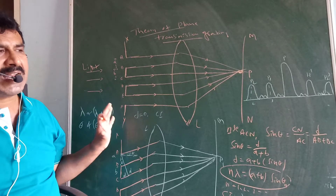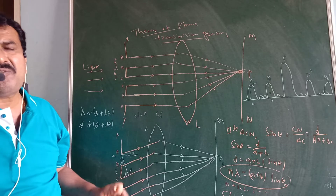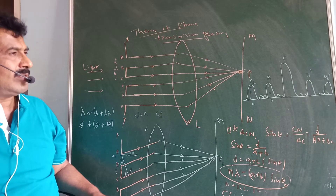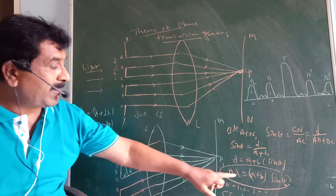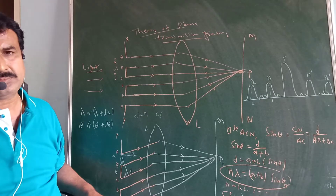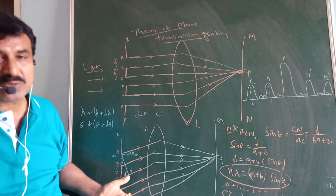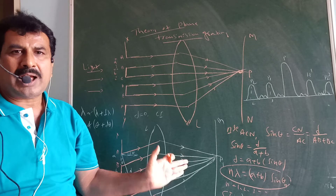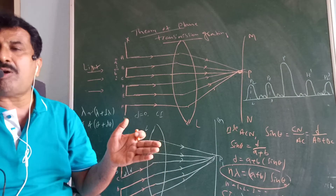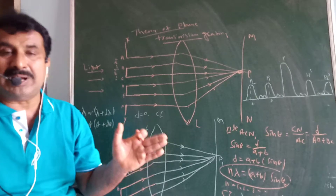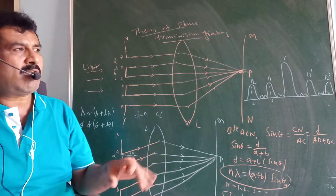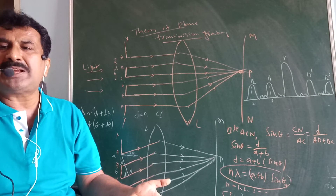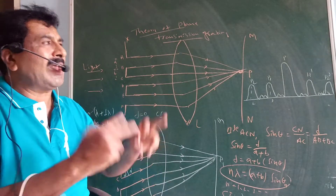This is the path difference between the secondary waves emanating from the extreme ends of each slit. If the path difference between the secondary waves is an integral multiple of wavelength lambda — that is, delta equals N lambda — then constructive interference takes place. For N equals 1, a bright band is produced at point P1, called the first order principal maximum. N equals 2 gives the second order principal maximum. N equals 3 gives the third order principal maximum. These are the bright bands produced on either side of the central band.